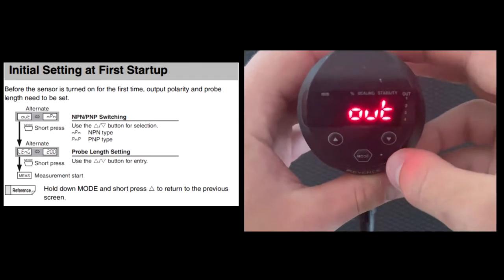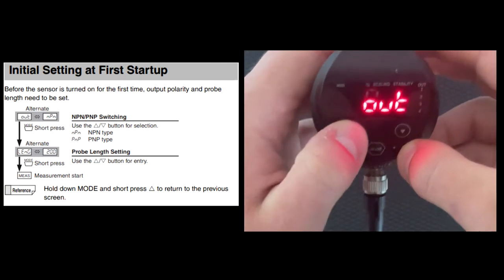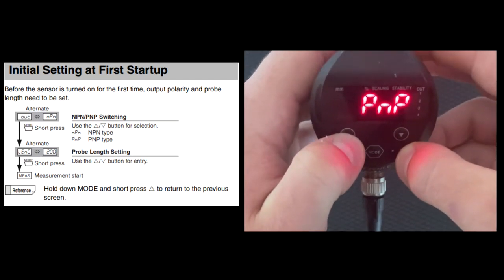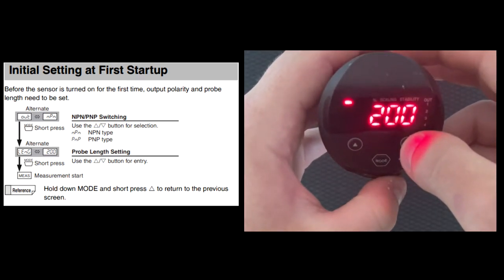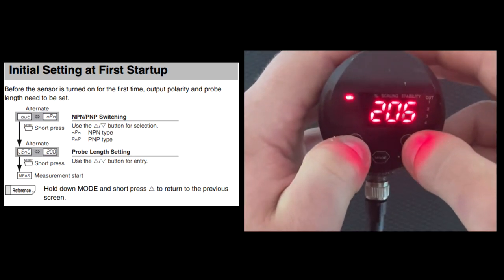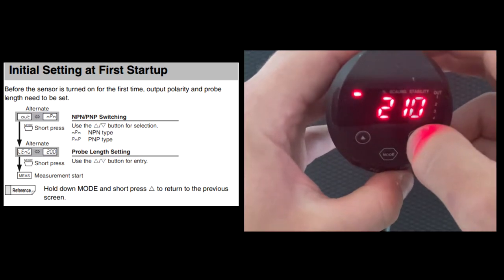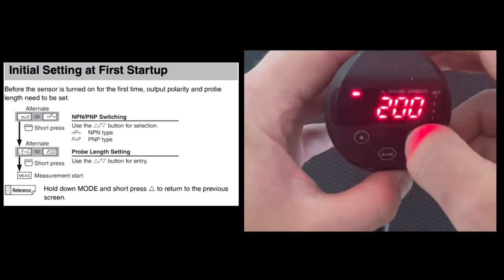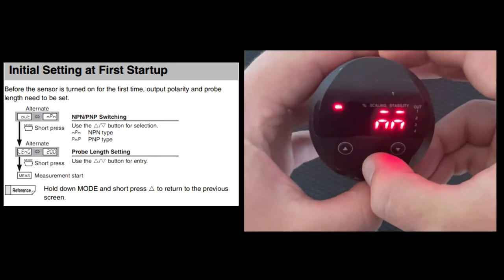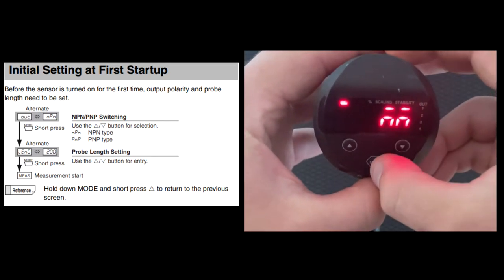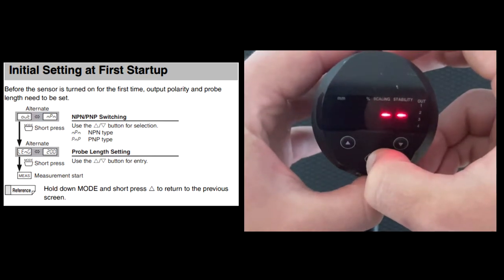When you first give power to the FL level sensor, you'll be greeted with the initial settings menu. Here you can select whether you need NPN or PNP and set the probe length designated by either the part number that you have received or if you had cut the probe within at least plus or minus 5 millimeters of the actual length. Finally, you can set your units as either percent or millimeters of the probe in the liquid.